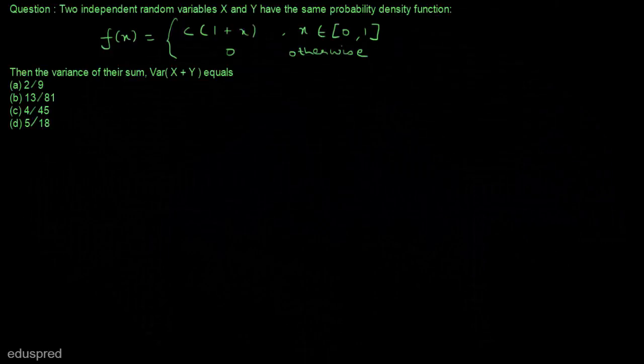In this video, I am going to solve this question. Two independent random variables x and y have the same probability density function, and this is the function that is given to us. We have to find the variance of their sum — that is, we have to find the variance of x plus y. And these are the options that are given to us.